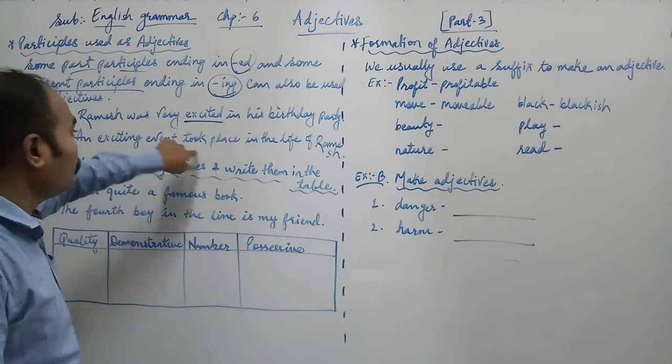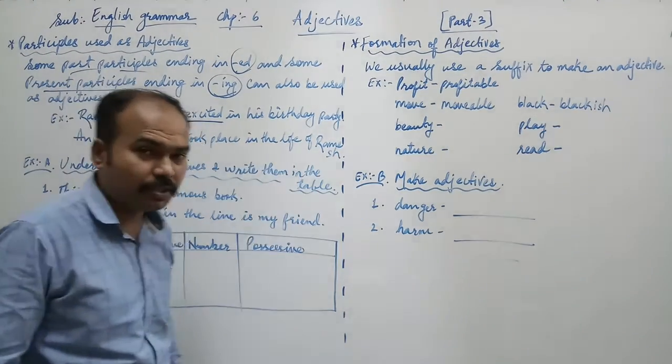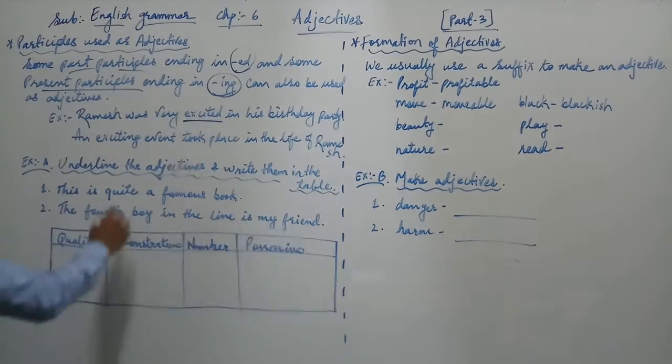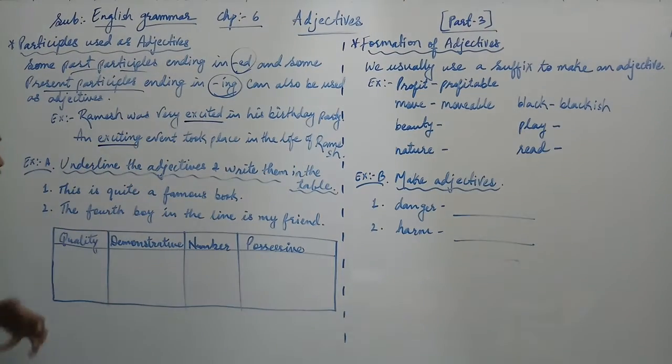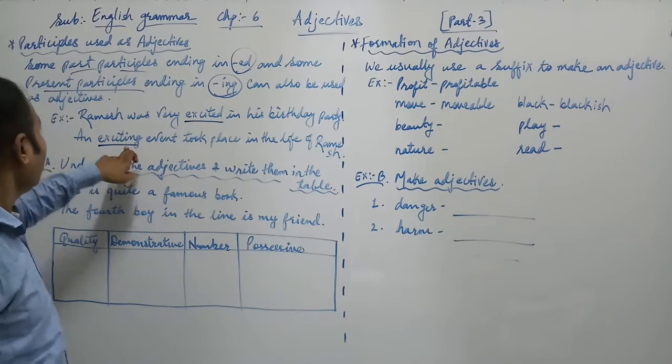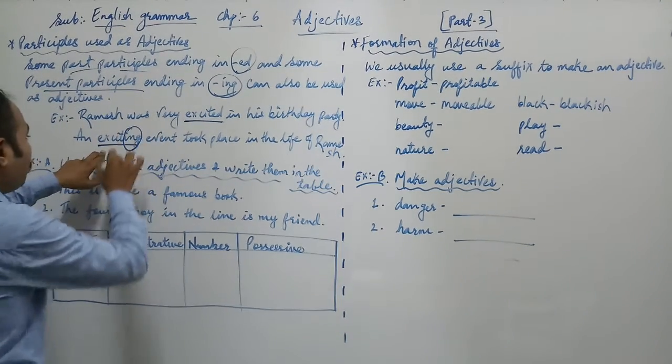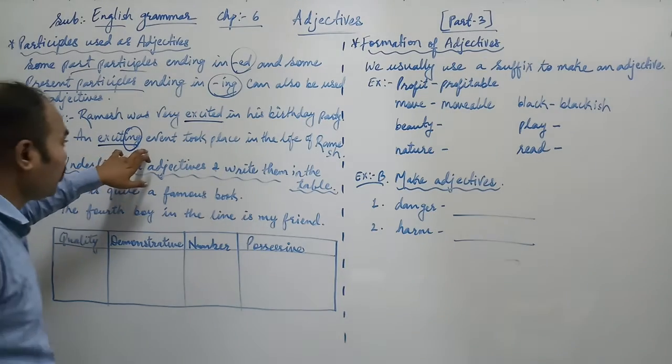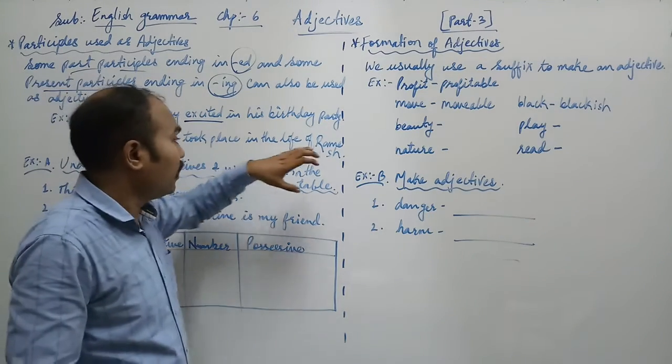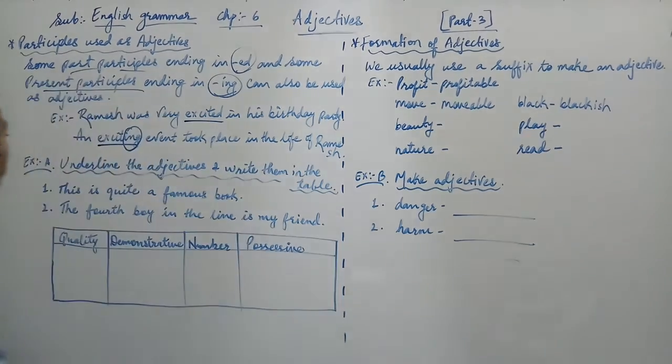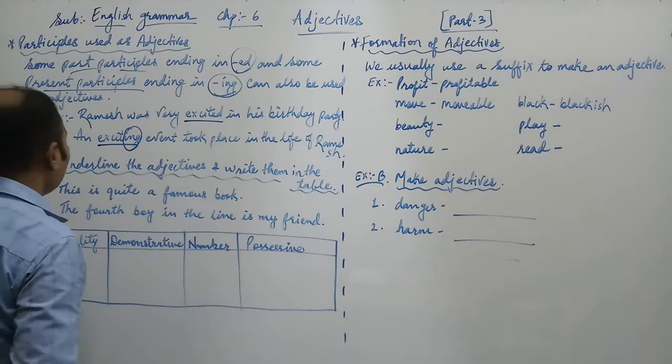Next, an exciting event took place in the life of Ramesh. We have used the word exciting with ING. This is your present participle because ING is used here. And this is working as an adjective to describe the event. It describes the feeling of Ramesh.